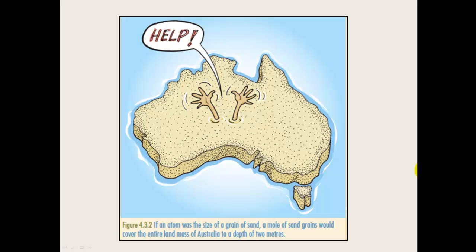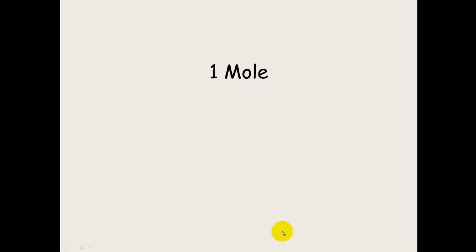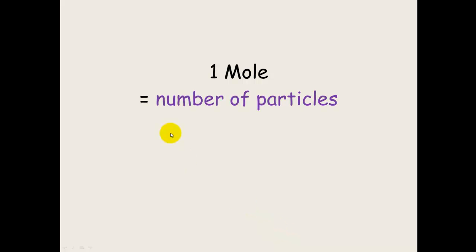So how big is this mole? Here's an example: if an atom was the size of a grain of sand, one mole of sand grains would cover the entire land mass of Australia to a depth of 2 metres. So it's a lot, a lot, a lot of particles — 6.02×10²³. One mole equals the number of particles, which is 6.02×10²³.